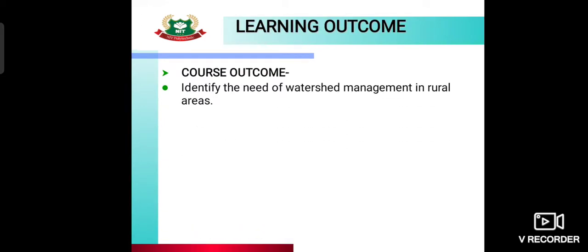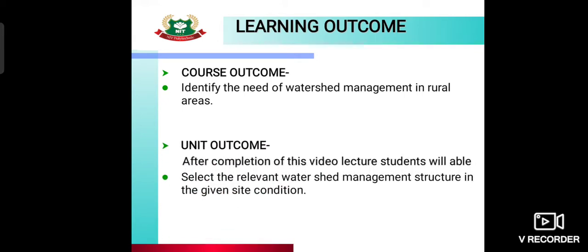Now, learning outcomes. There is a course outcome and a unit outcome. The course outcome is to identify the need of watershed management in rural areas. In the unit outcome, after completion of this video lecture, students will be able to select the relevant watershed management structure for the given site condition.